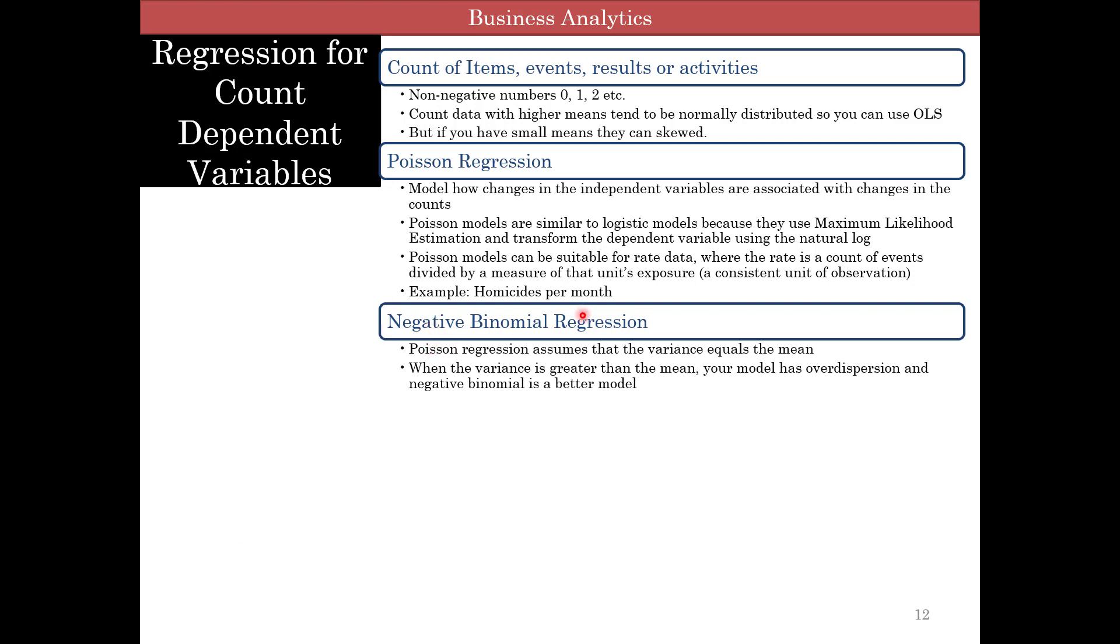Sometimes you can use negative binomial regression, which is another distribution. Poisson assumes variance equals mean, but when variance is greater than mean, Poisson cannot be used. The model is called over-dispersion, which means it's dispersed too much, and negative binomial is a better model.